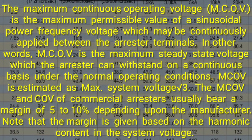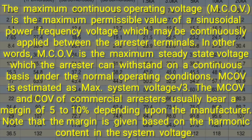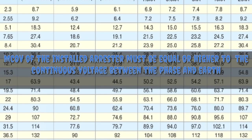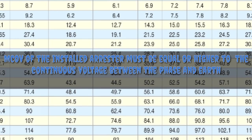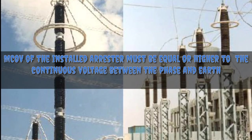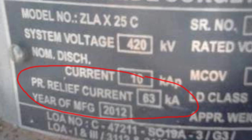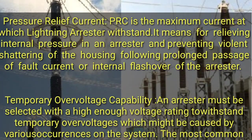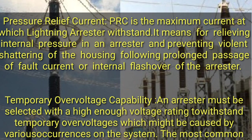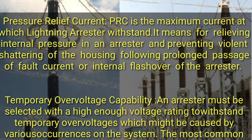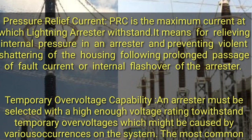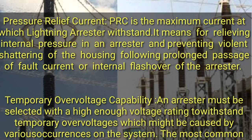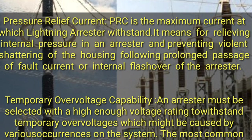Note that the margin is given based on the harmonic content in the system voltage. MCOV of the installed arrestor must be equal to or higher than the continuous voltage between the phase and earth. Now pressure relief current, which is 63 kiloamperes. PRC is the maximum current at which the lightning arrestor withstands — it is a means for relieving internal pressure in an arrestor and preventing violent shattering of the housing following prolonged passage of fault current or internal flashover.